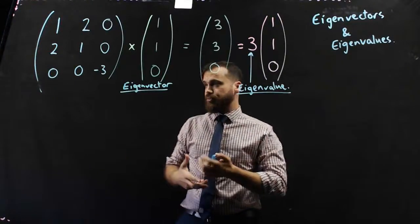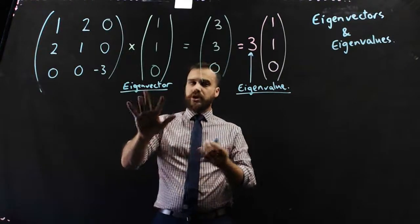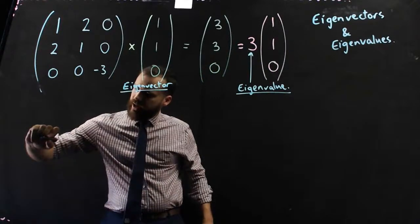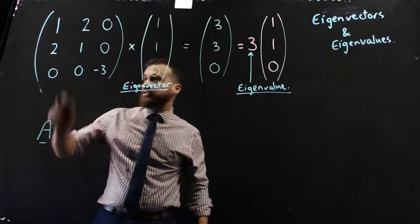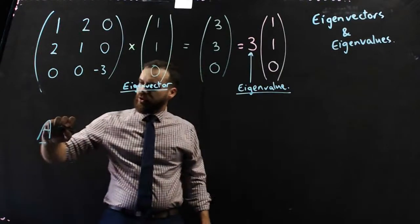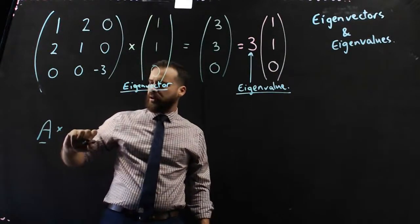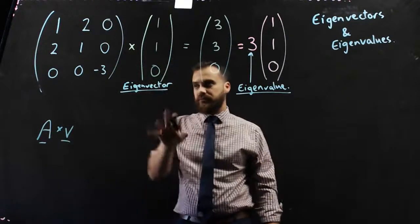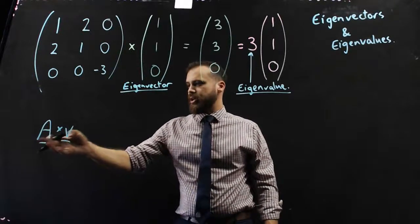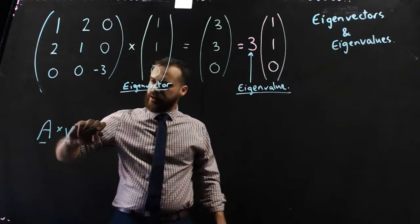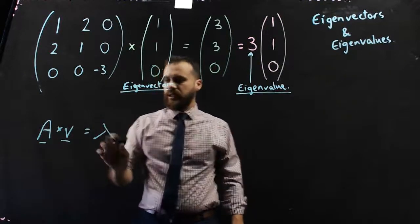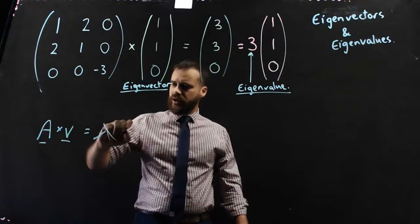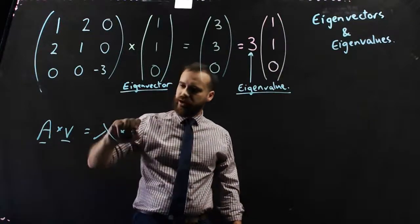Let's come up with a more formal thing here. So, an eigenvector and an eigenvalue can be defined such that a vector, a vector, let's call this vector A, times, now, we'll call this V for eigenvector. So, A times V is equal to lambda, lambda, L-A-M-B-D-A, times the eigenvector.